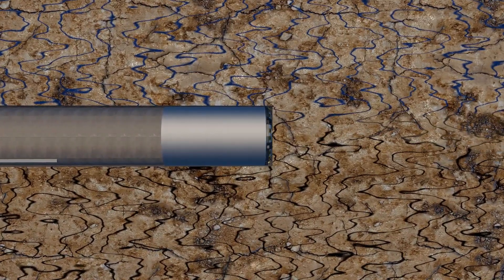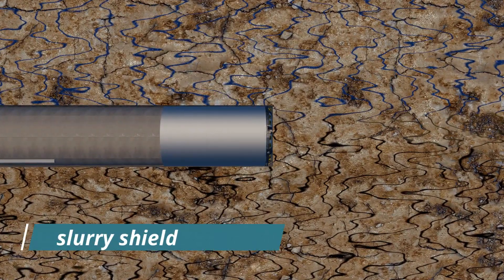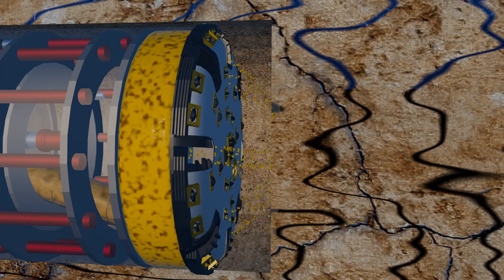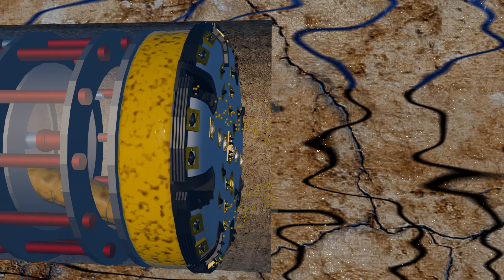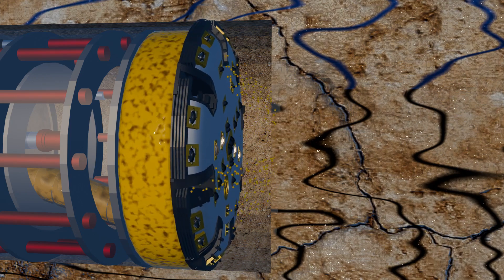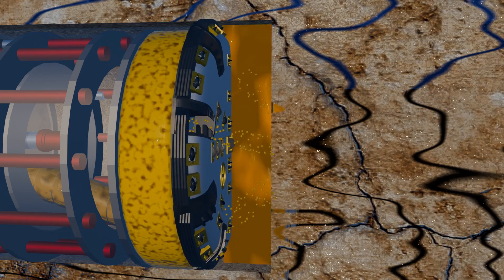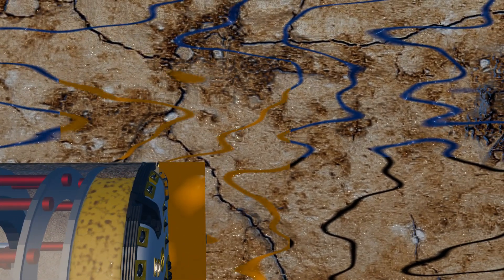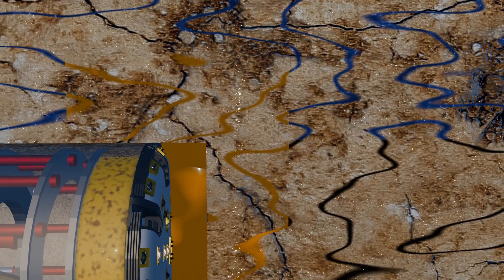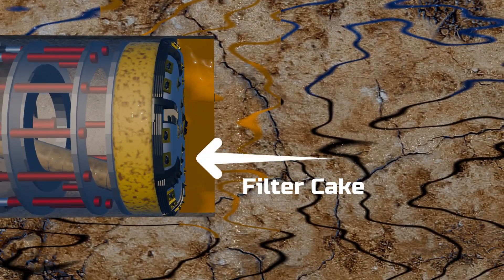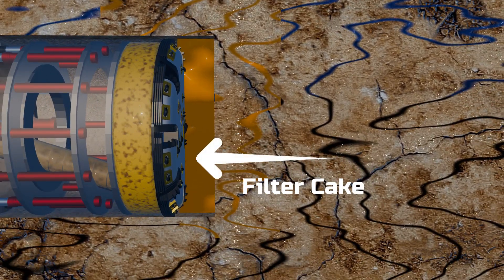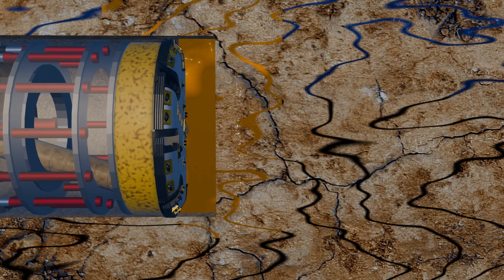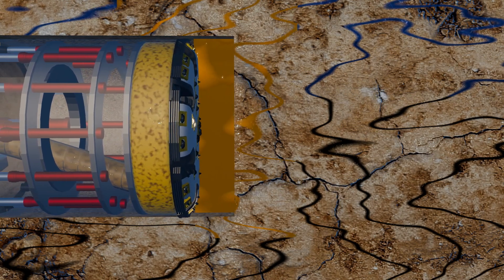To address this issue, the French team used a slurry TBM. This machine mixed bentonite, clay, water, and polymer and injected the mixture under pressure into the tunnel face from the TBM's cutter head. This slurry filled the cracks, effectively stopping the water leakage. Additionally, the mixture formed a filter cake on the TBM's front face, sealing the cracks and eliminating the water ingress problem entirely. With the water leakage resolved, the TBM head could resume cutting, and the machine advanced smoothly.